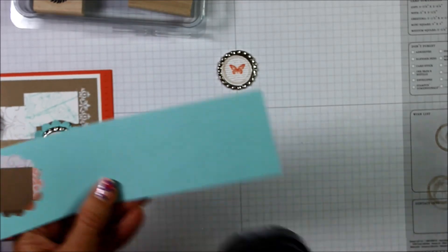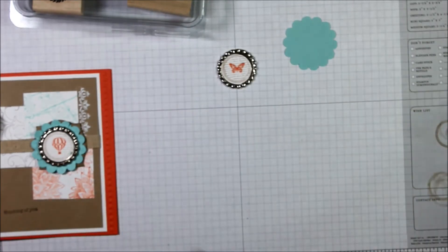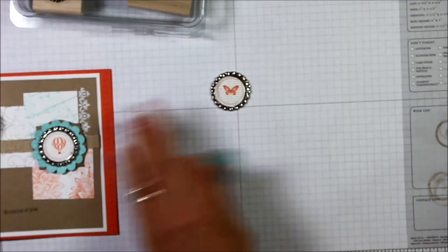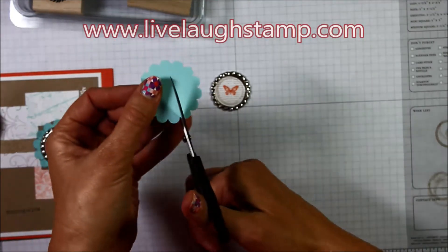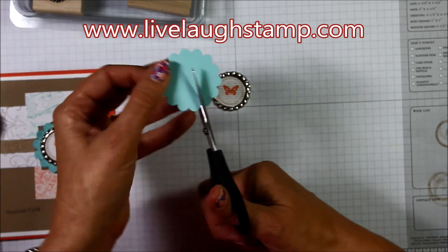Now let me talk to you for just a minute about this cute scallop circle. I'm using the scallop circle punch and I'm punching out Pool Party. And now we're just going to take the paper snips and I am just going to come alongside here and just go in and do little notches.